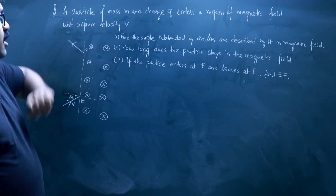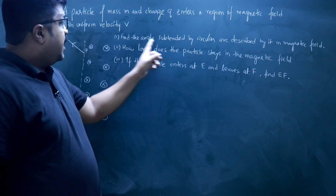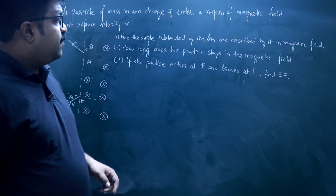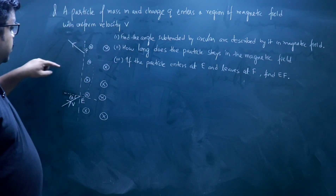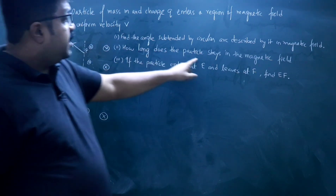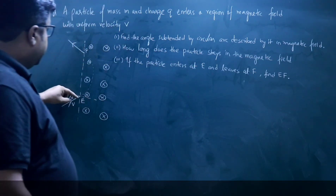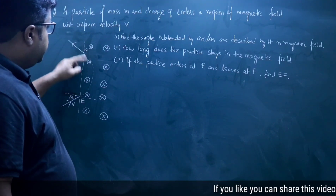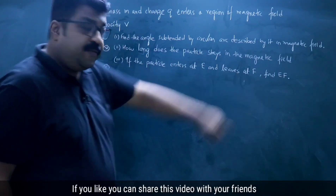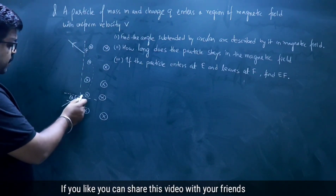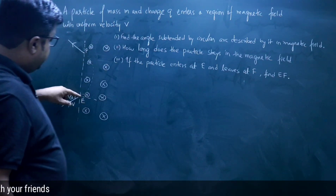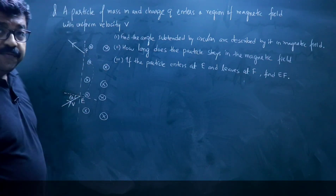There are three things we have to find: first, find the angle subtended by the circular arc described by the particle in the magnetic field — that is the angle at the center; second, how long does the particle stay in the magnetic field, the time spent in this region; and third, if the particle enters at E and leaves at F, find EF, this distance.